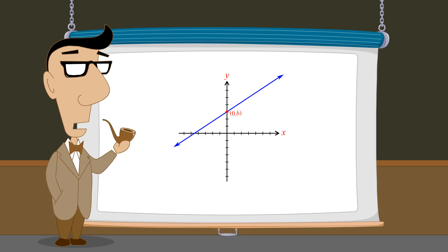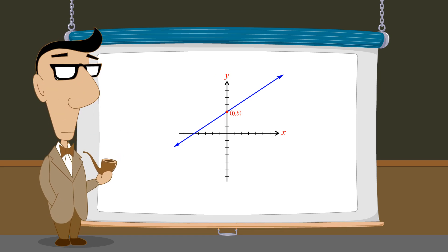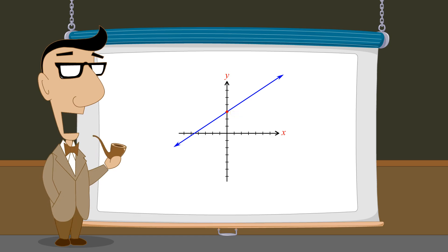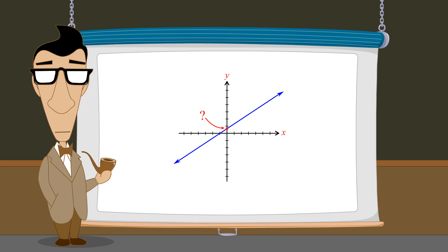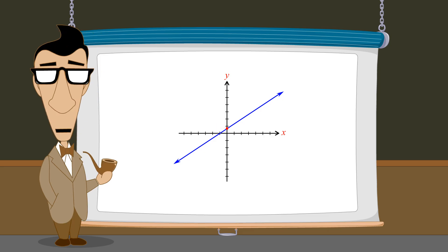In some cases, when looking at the graph of a line, it may be impossible to determine the exact coordinates of the point where the line and the y-axis meet. However, we are often able to discover the coordinates of some other point on the line.